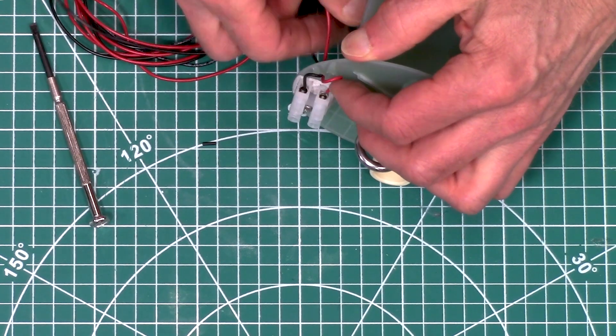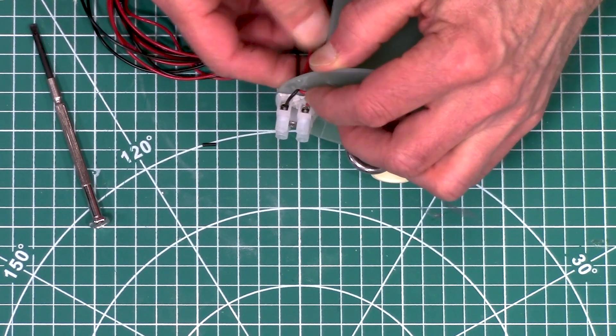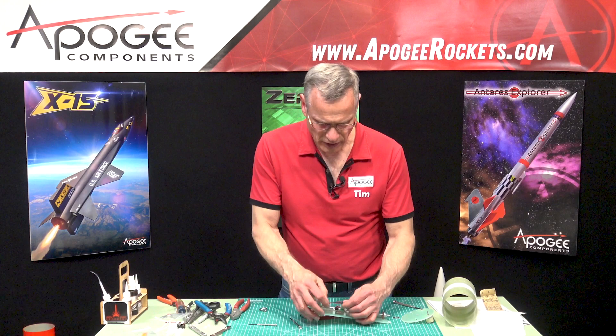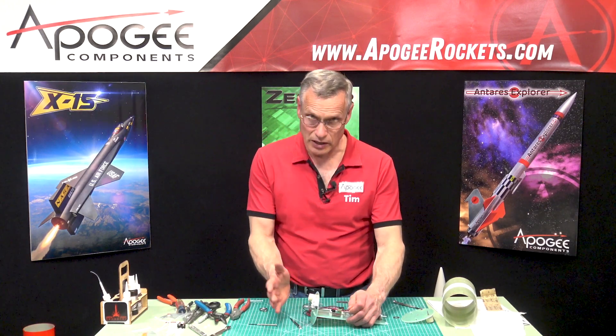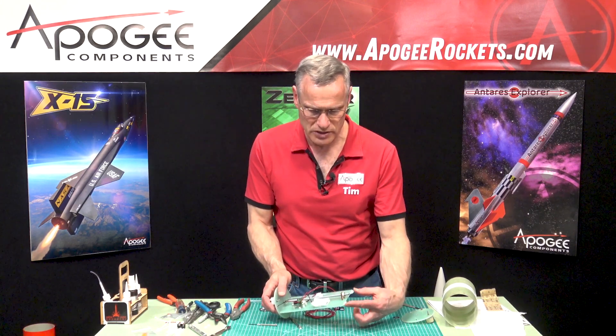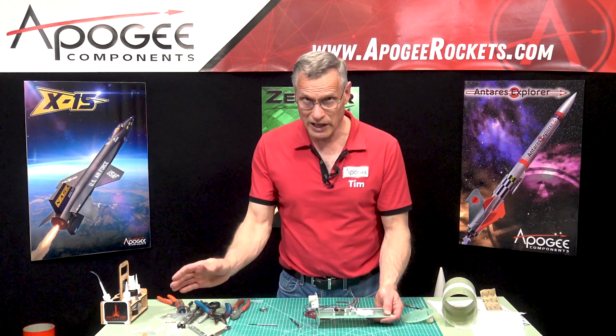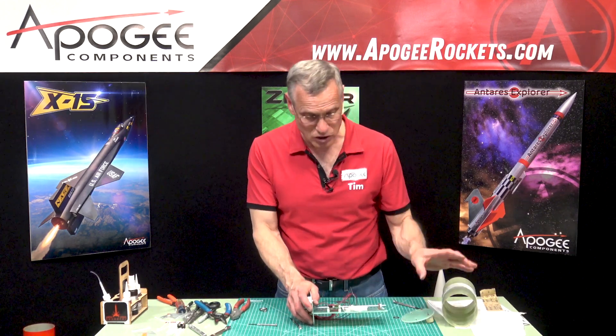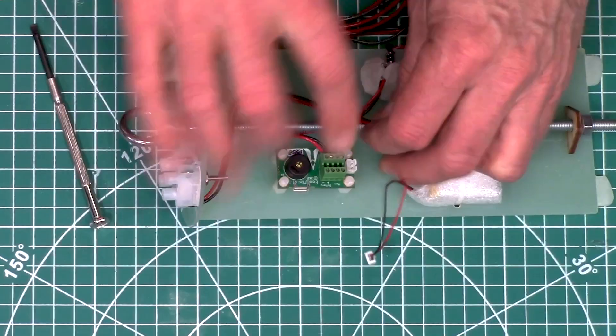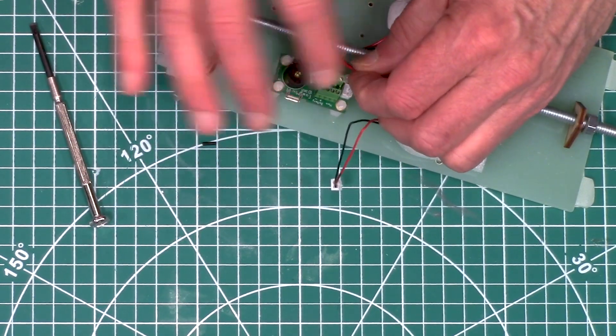Okay, and then pull these. All right, and then on this end the bottom side is going to be—like I said before, this side is going to be my top, this is going to be my bottom. My main chute will be near the bottom—no, actually my main chute's in the top, my drogue chute's in the bottom. So that's going to go to the apogee terminal here on this terminal block.